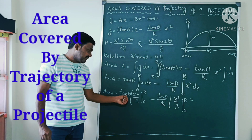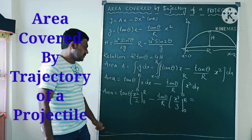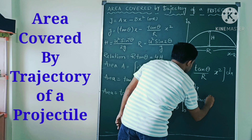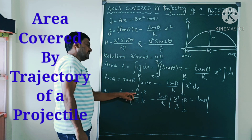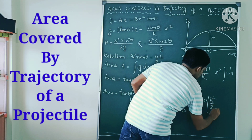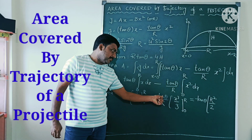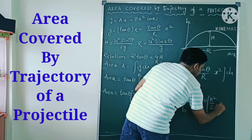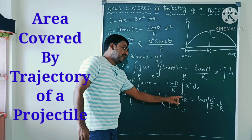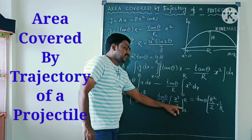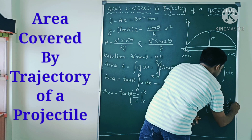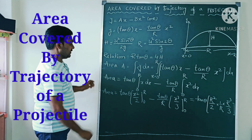Observe this equation. Tan θ is constant. Substituting the upper limit x = R: the first term gives R²/2. Taking tan θ as common, the remaining factor is 1/R; substituting x = R into x³/3 gives R³/3. Since 0 by anything is 0, those lower-limit terms vanish.